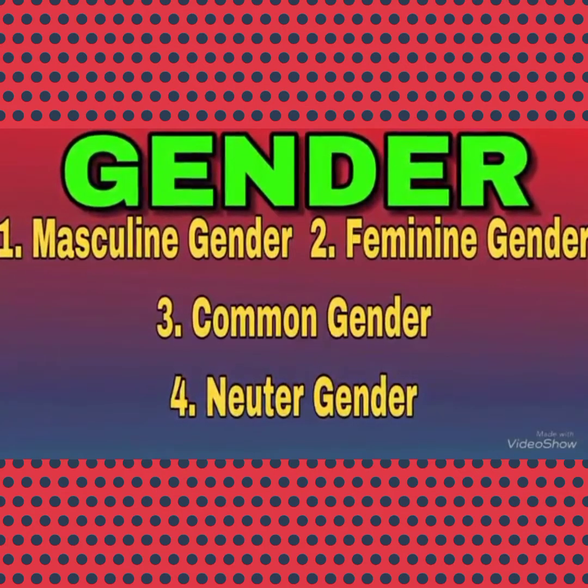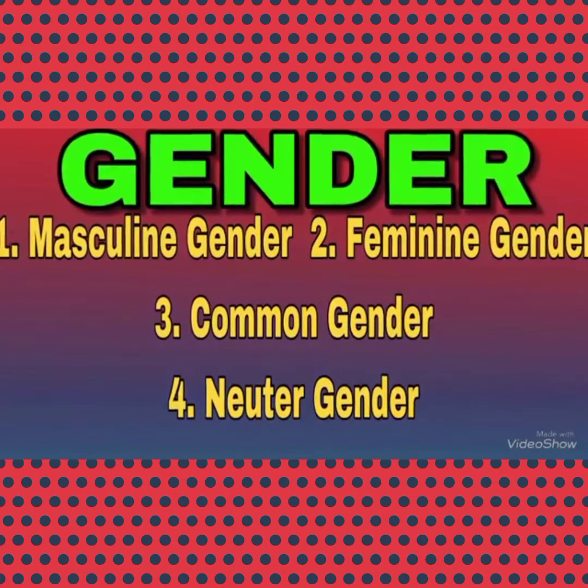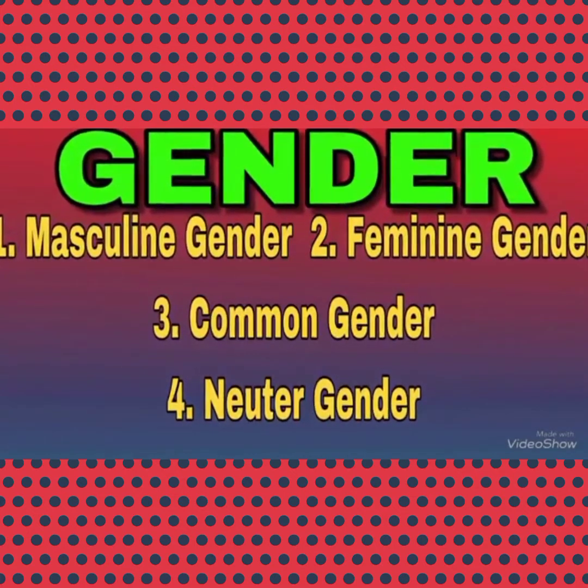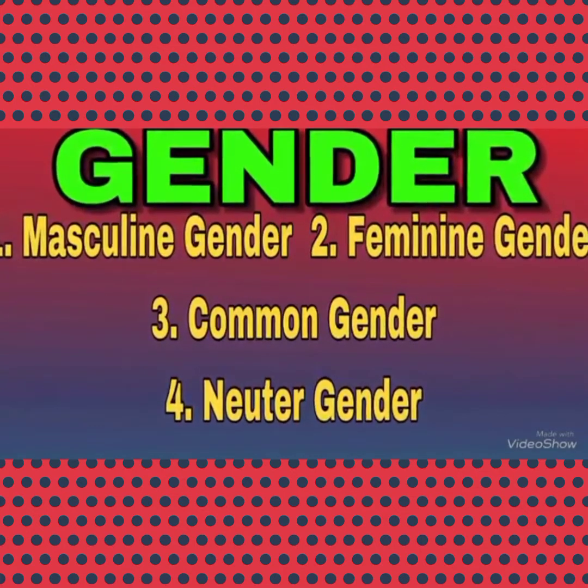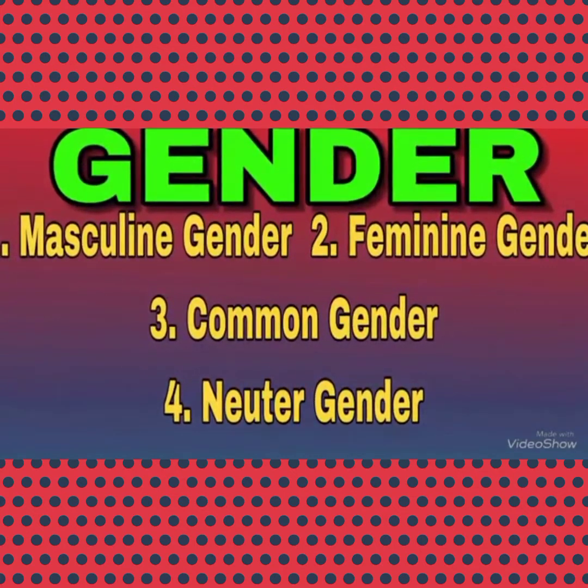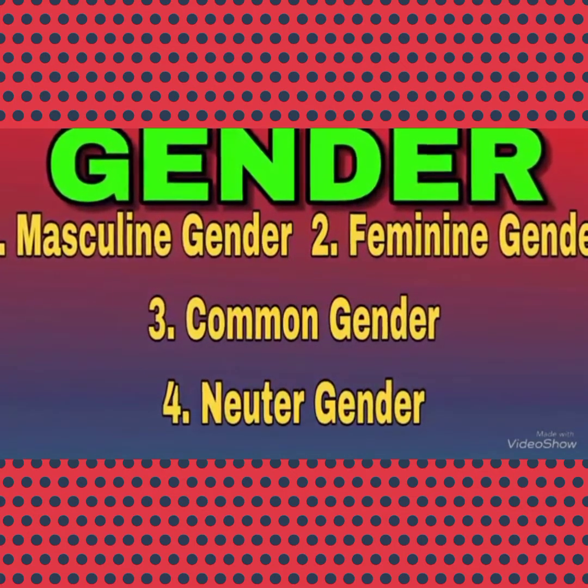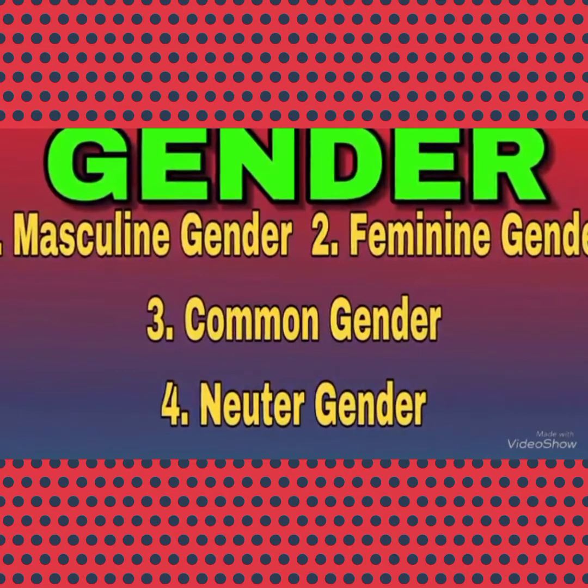There are 4 kinds of gender: 1. Masculine, 2. Feminine, 3. Common Gender, 4. Neutral Gender. So in all there are 4 kinds of gender.